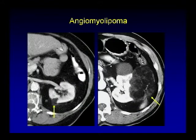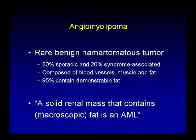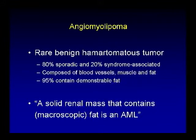Now let's move on to fatty masses — two cases of masses with macroscopic fat characteristic for renal angiomyolipoma. Angiomyolipomas are benign hamartomas; 80% are sporadic with 20% syndrome-associated. They're composed of blood vessels, muscle, and fat, and 95% contain macroscopic fat. The rule is: a solid renal mass that contains macroscopic fat is an angiomyolipoma — no real differentials. On oral boards, when you see a solid mass, look for macroscopic fat. If you see it, you're done.